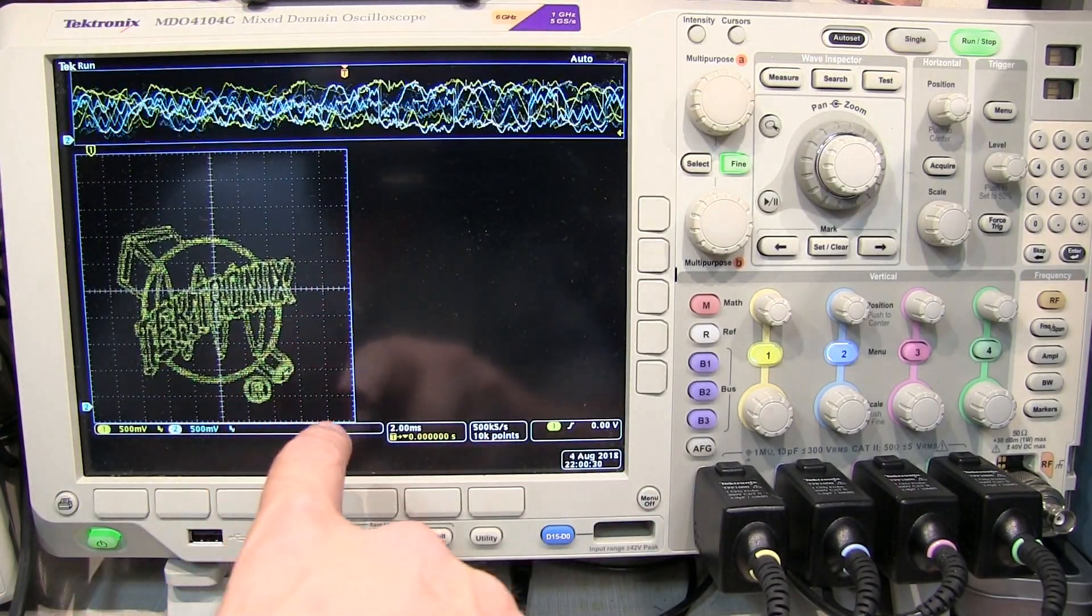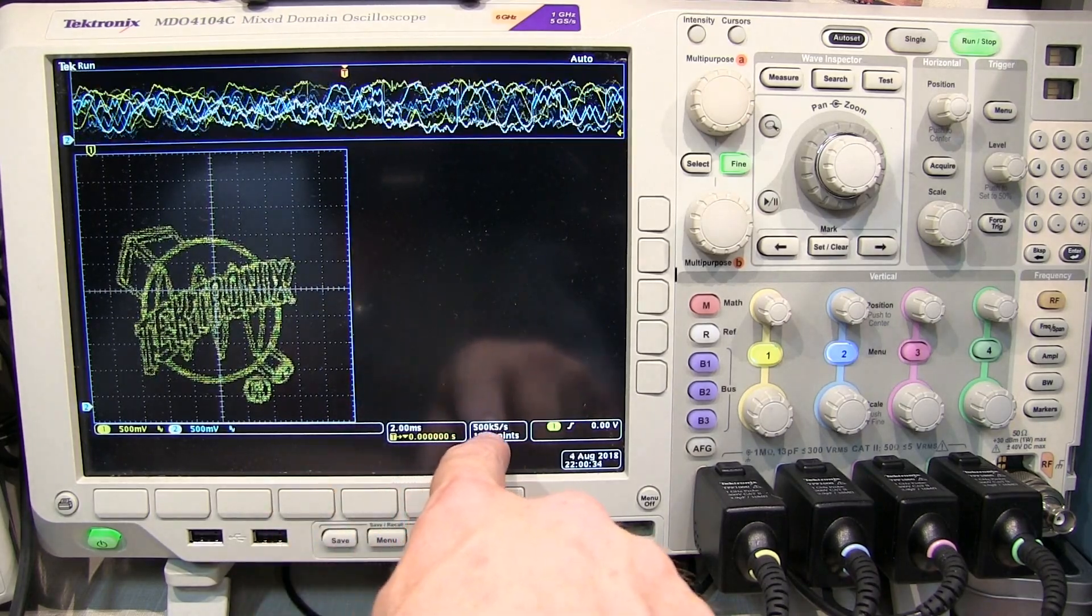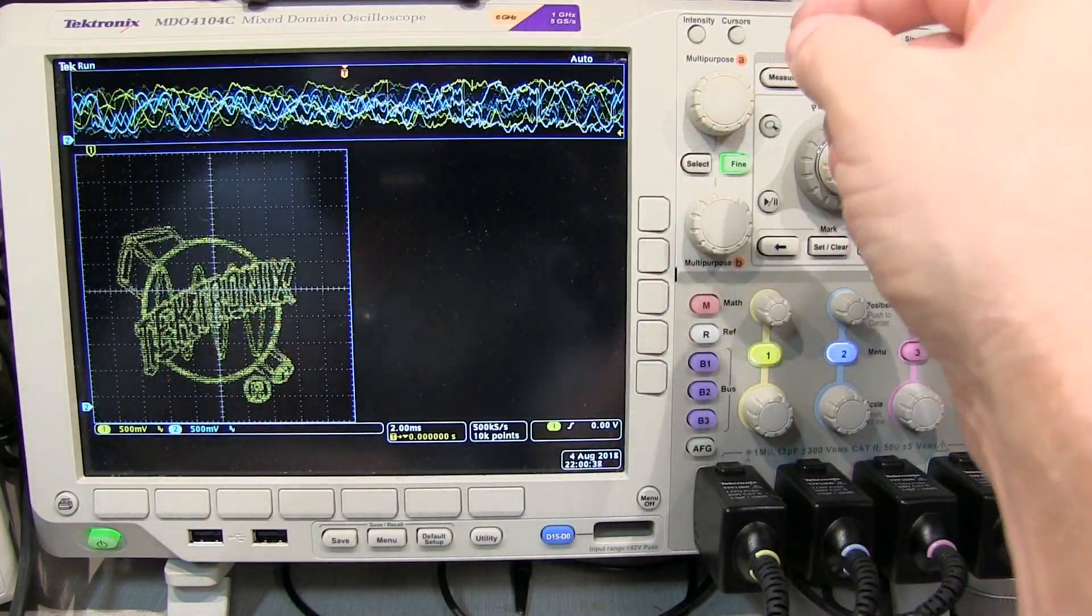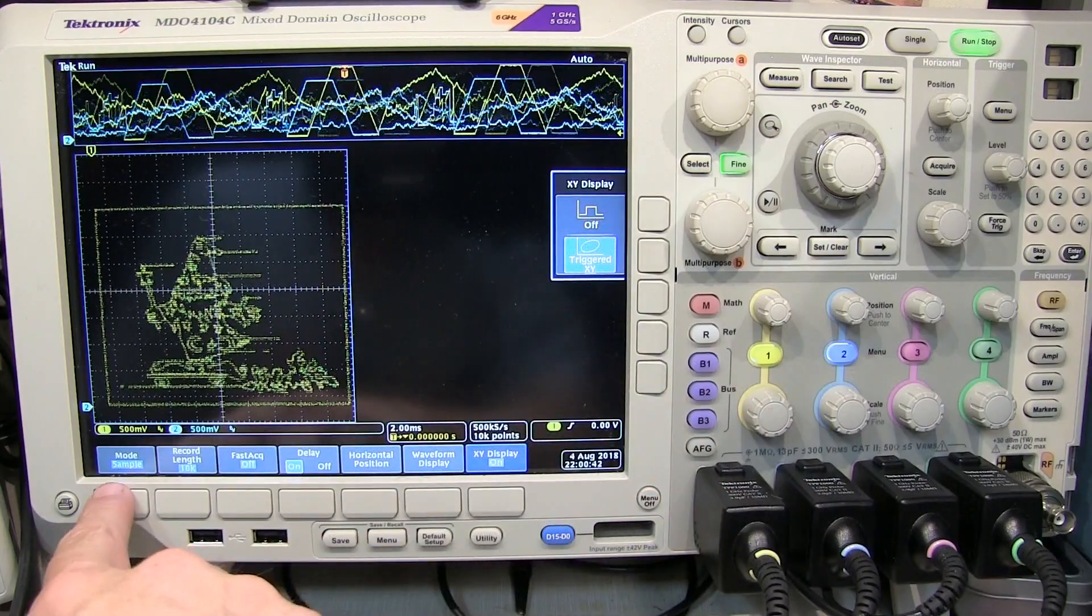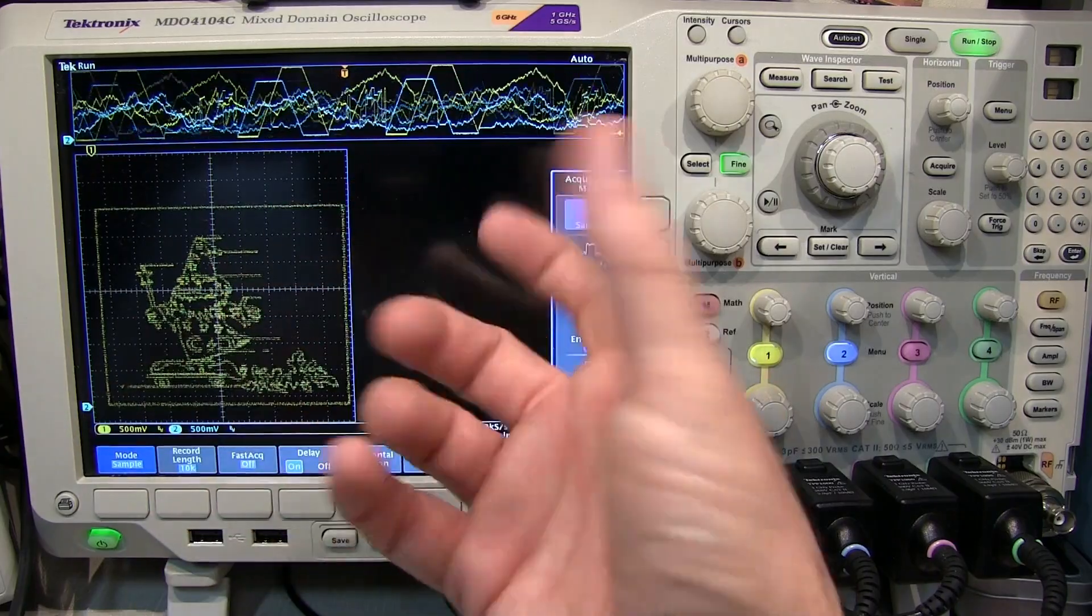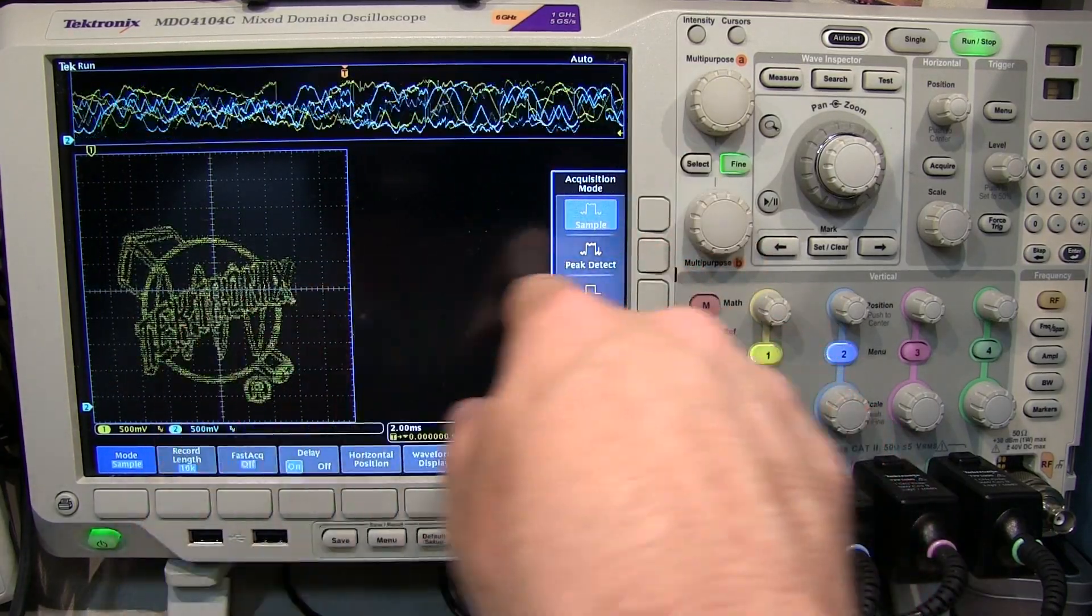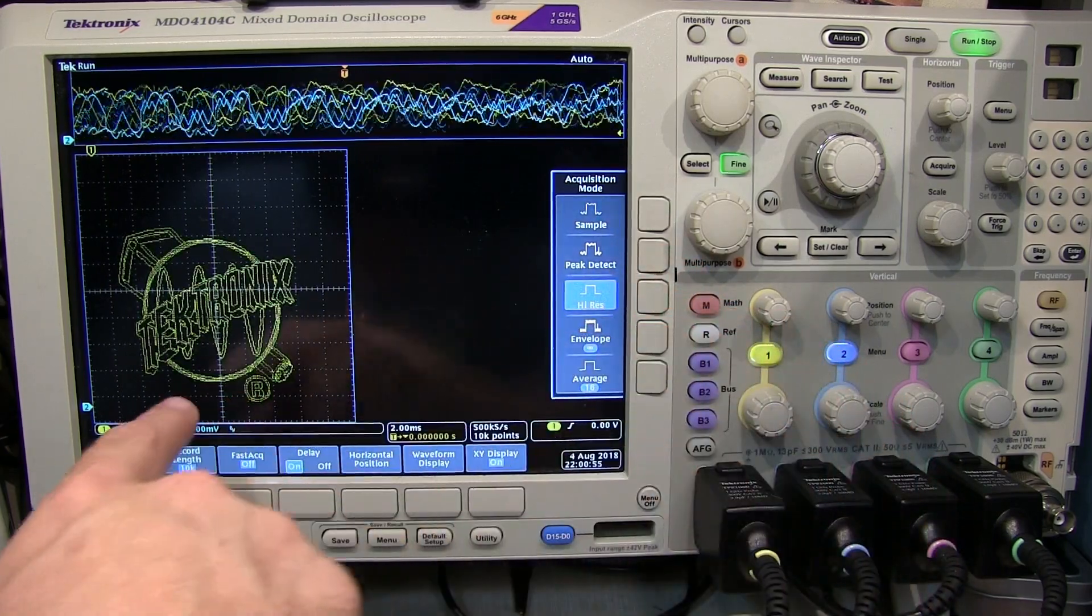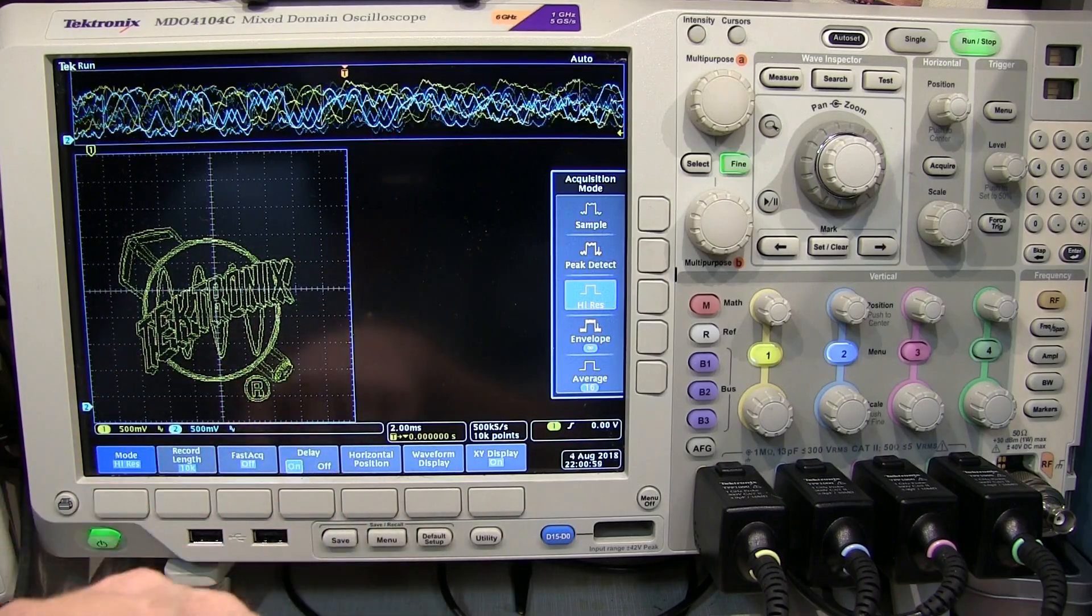Now the other thing is that we're running about 10,000 points here at 500 kilo sample per second. Now the scope is capable of sampling at 5 giga sample per second, so we can put the scope into what's known as the high res sampling mode. High res sampling mode will do an in-situ average and essentially do a little bit more low pass filtering and higher resolution result. And if we switch to that, we can actually see we clean that graphic up quite a bit. And it's actually pretty sharp. It's actually not too bad.